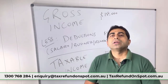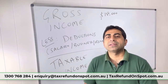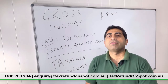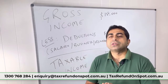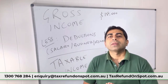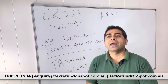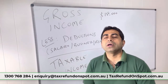From gross income, you claim some deductions. For employment, deductions can include work-related car expenses, work-related uniform, mobile expenses, charity, or tax agent fees. For rental income, the deductions include land tax, repairs, mortgage interest on loans, council rates, and water.